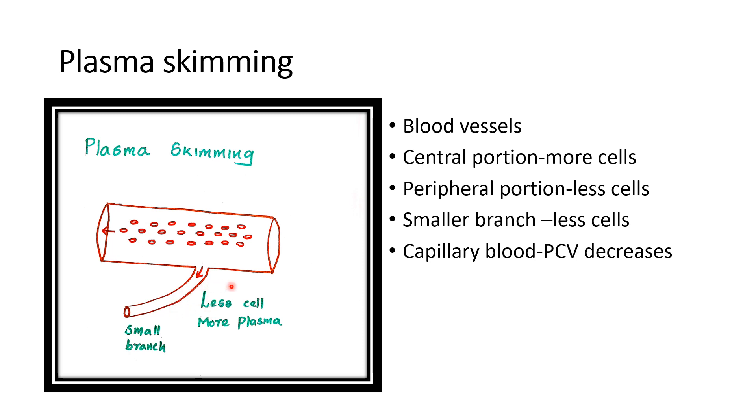The capillary blood always contains 25% less PCV compared to the whole blood. That is due to this skimming effect, the plasma skimming effect.